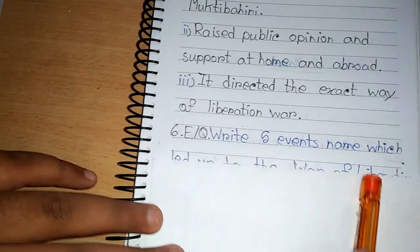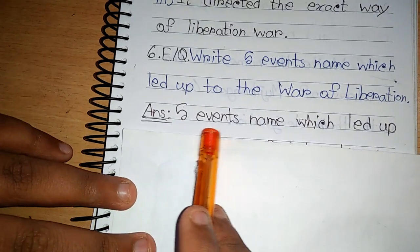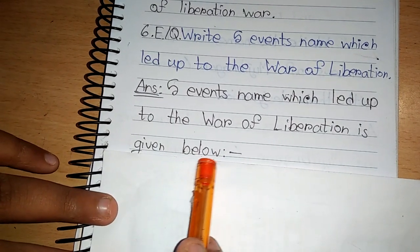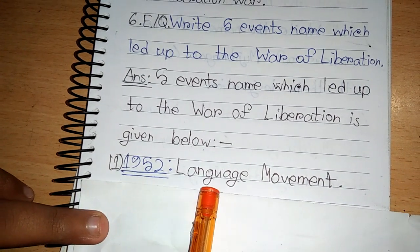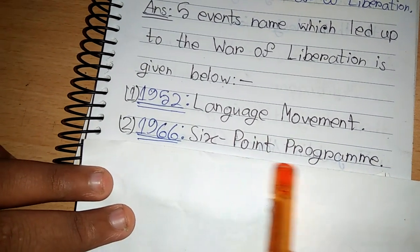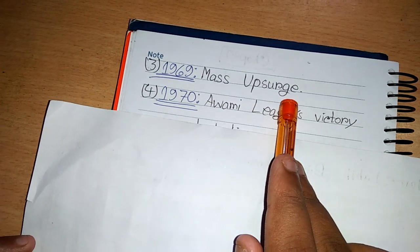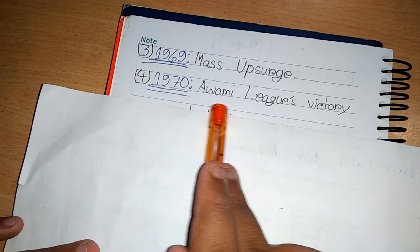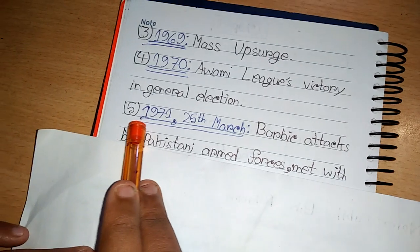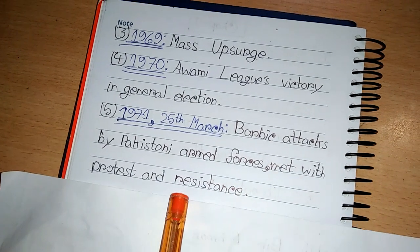Fourth question: Write five event names which led up to the war of liberation. Number 1, the 1952 Language Movement. Number 2, the 1966 Six-Point Program. Number 3, the 1969 Mass Uprising. Number 4, the 1970 Awami League's victory in the general election. Number 5, 1971, 25th March, barbaric attacks by Pakistani armed forces met with protest and resistance.